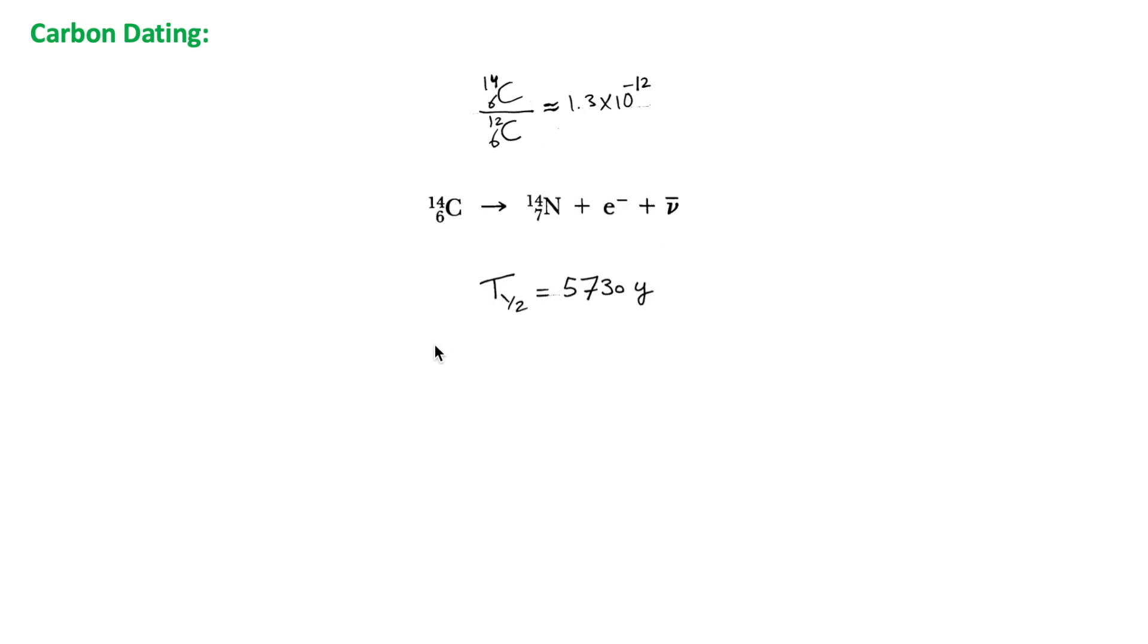The beta-active carbon isotope C-14, known as radiocarbon, has too many neutrons, so it's unstable and will beta decay into nitrogen-14 with a half-life of 5,730 years. Living plants and animals all have the same ratio of radiocarbon to ordinary carbon of approximately 1.3 times 10 to the minus 12.